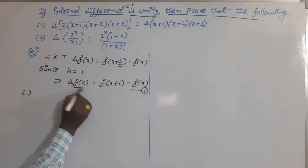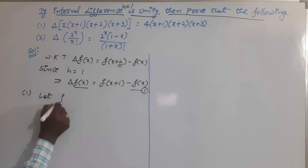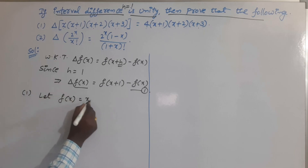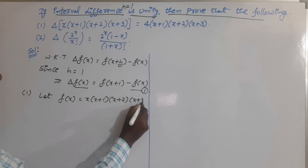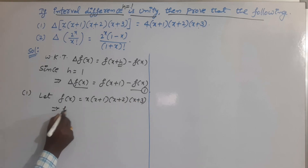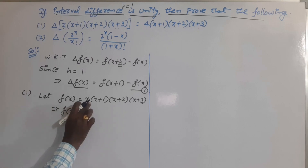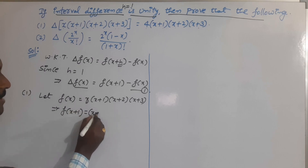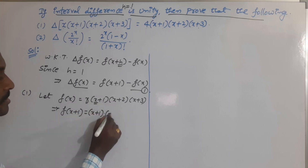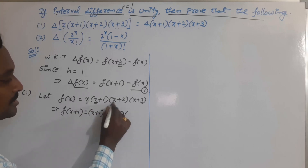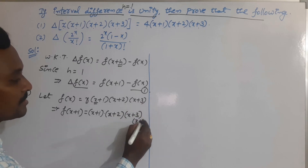Starting the first problem: f(x) is x(x+1)(x+2)(x+3). So let f(x) = x(x+1)(x+2)(x+3). From this, f(x+1) means replacing x with x+1 throughout, giving (x+1)(x+2)(x+3)(x+4).